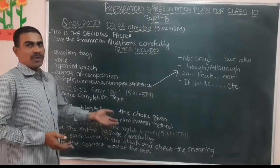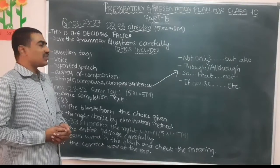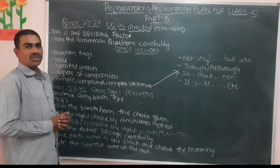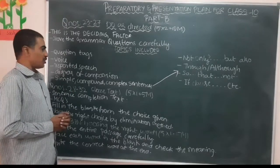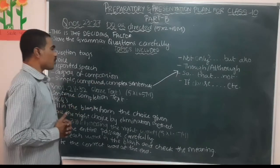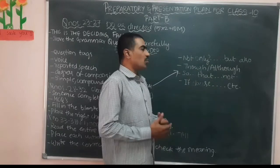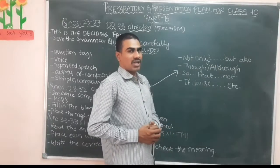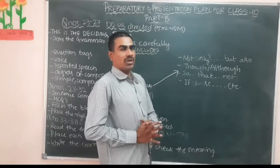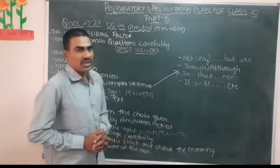Looking at recent board papers, certain topics are repeated very frequently. The first is adding suitable question tags. Then active voice and passive voice, reported speech — direct and indirect speech — and degrees of comparison. Under simple, compound, and complex sentences, the frequently appearing connectors are: not only but also, neither nor, either or, though, although, even though, too…to, so that, not very, and so on. Also if-clauses. These are the very common grammar topics.